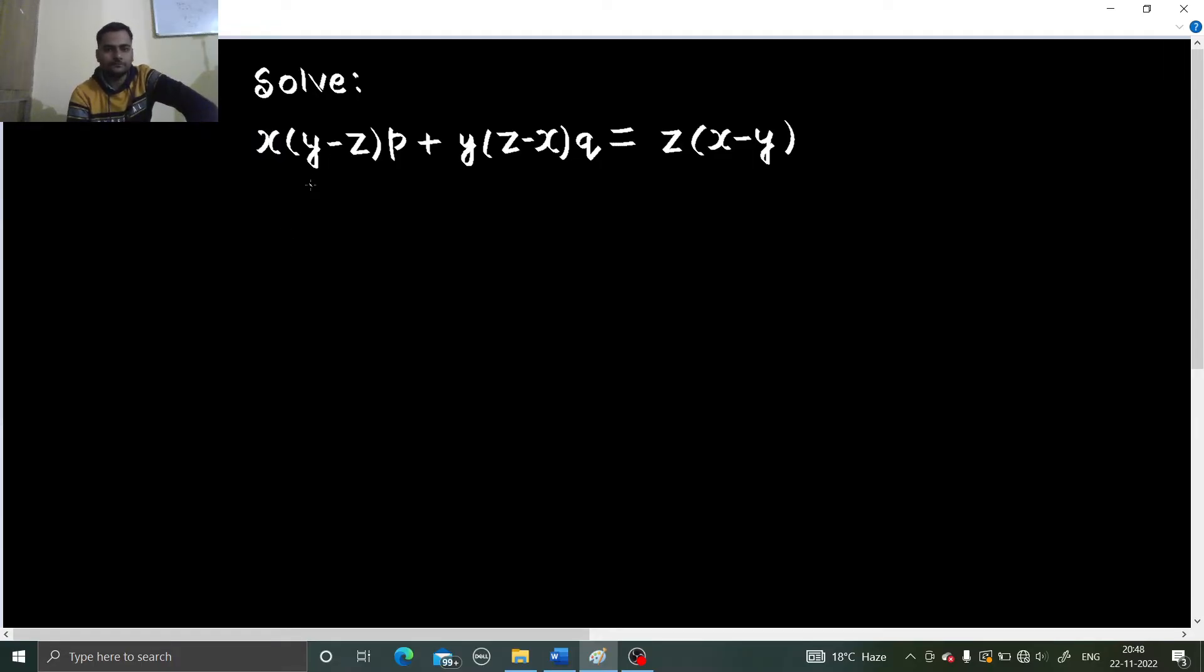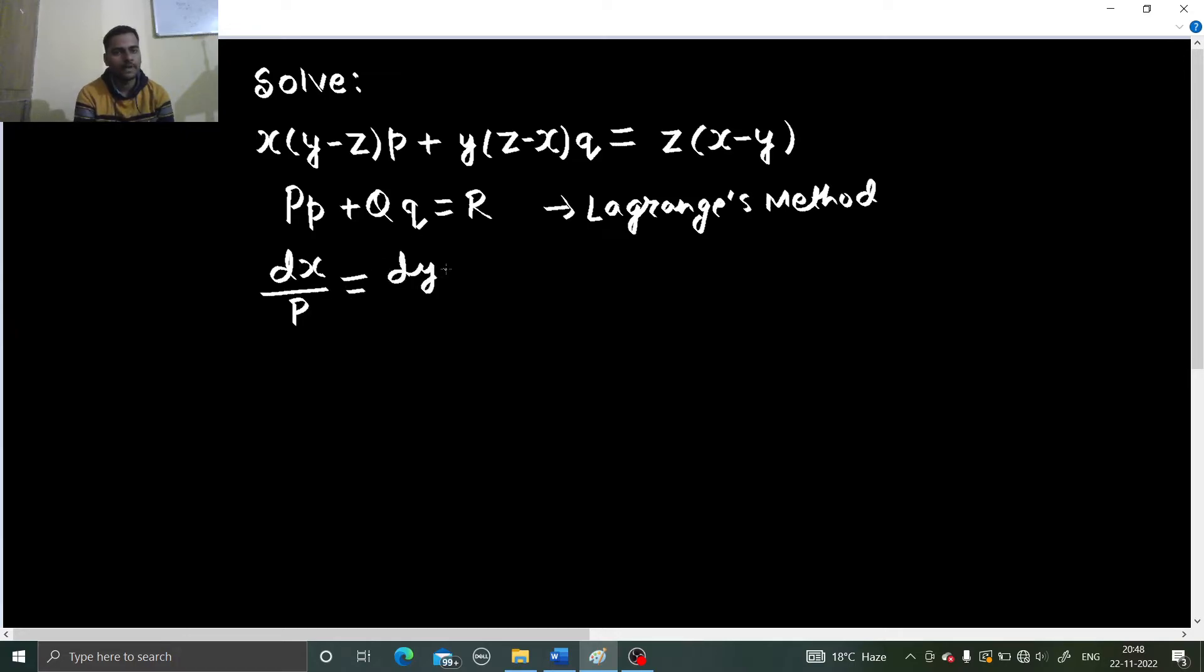Now here, this is of the form p p, this is small p plus q q equals to r. That's why whenever you get this form, we use the Lagrange's method to solve this. And we first try to solve this by method of grouping which says dx by p equals to dy by q equals to dz by r.